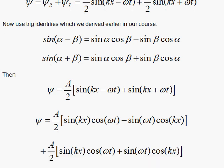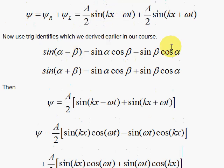Well, let's see. We have here the α equals kx, and the β equals ωt. So kx for the α and β is the ωt. So here you have a minus sign, and here you're going to have a plus sign.